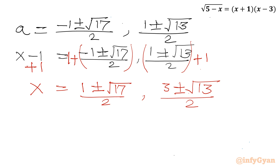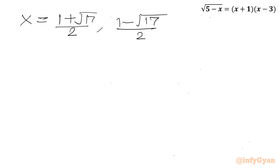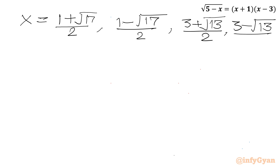There are four solutions. We have to accept only the real valid solutions and reject the extraneous ones. The four candidate solutions are: x equals (1 plus root 17) over 2, x equals (1 minus root 17) over 2, x equals (3 plus root 13) over 2, and x equals (3 minus root 13) over 2.